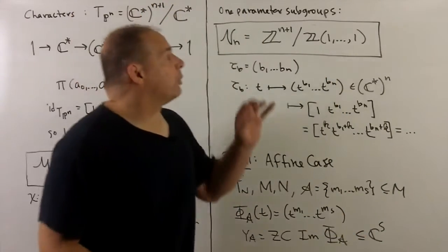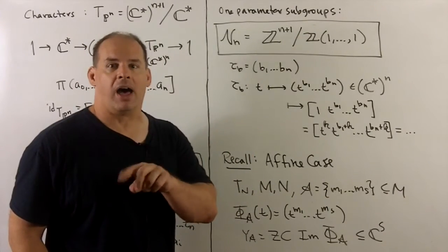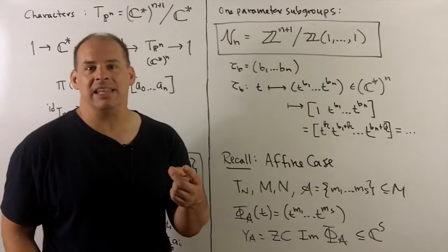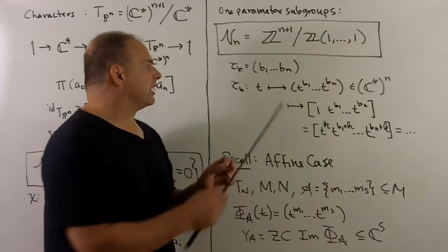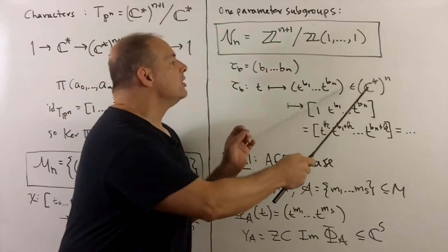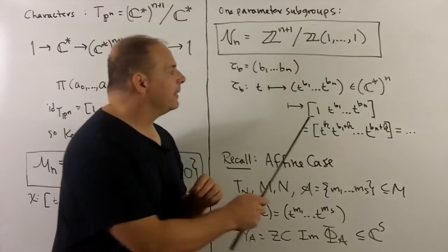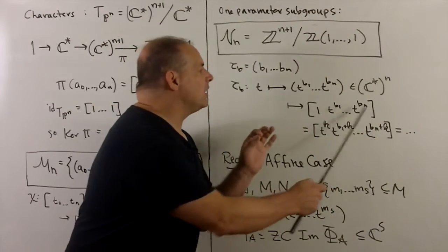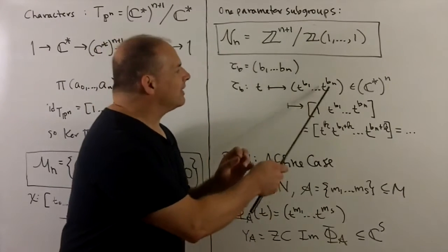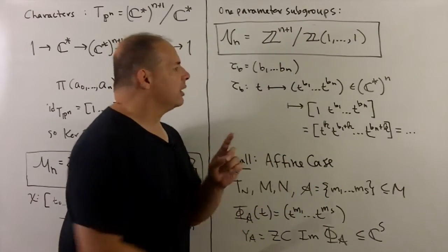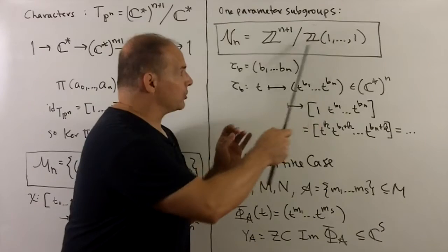Next, the lattice of one-parameter subgroups. We'll identify this with Z^(n+1) modded out by all integral multiples of (1,1,...,1). To see this: take a one-parameter subgroup in C*^n — we just take an n-tuple of integers. C*^n maps to the torus by putting a one out front and taking the projective class. For this class, it won't change if we multiply all entries by t, t^2, t^3, and so on. So we get the same one-parameter subgroup if we change our b's by adding the same number to all of them. That means we can mod out by all multiples of (1,1,...,1).